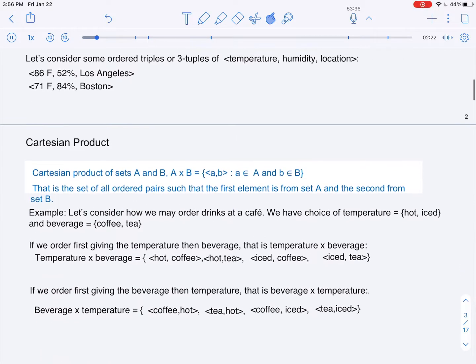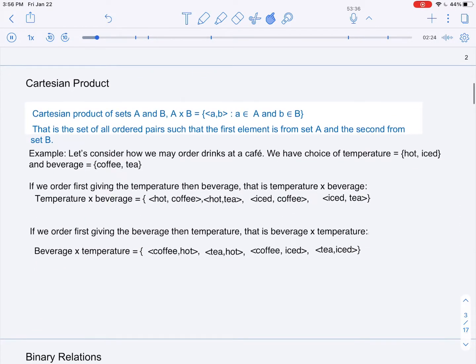Now we're often concerned about ordered pairs from two sets. In this case, we're considering the Cartesian product of two sets A and B.